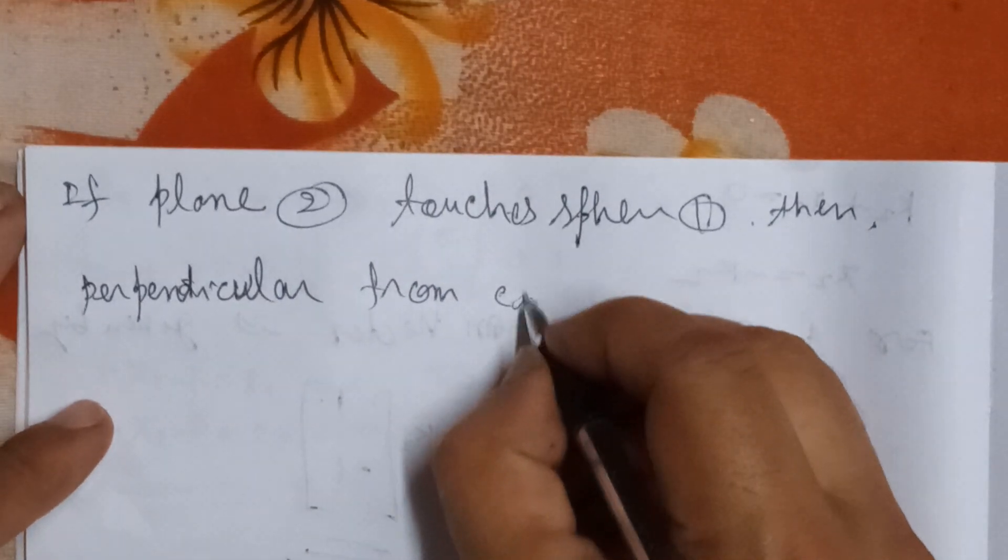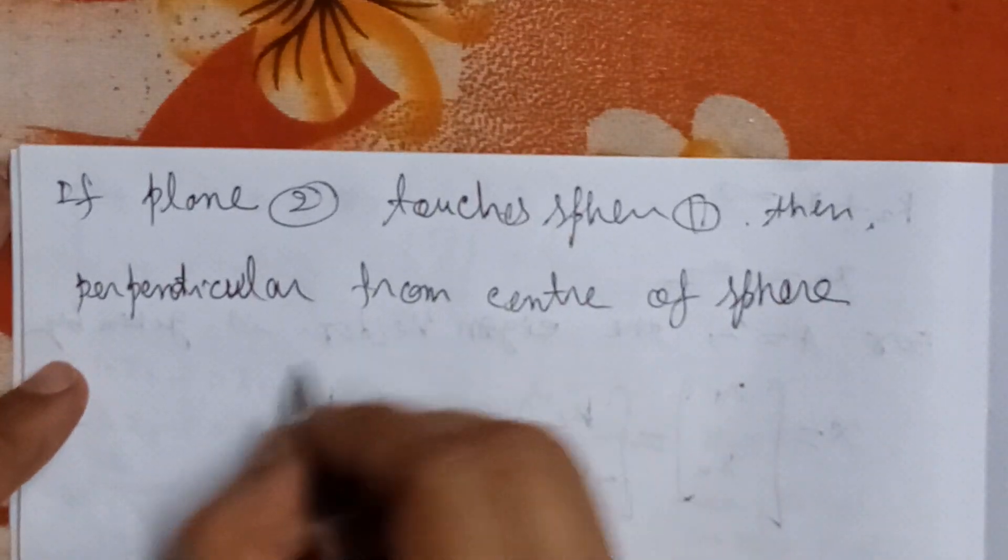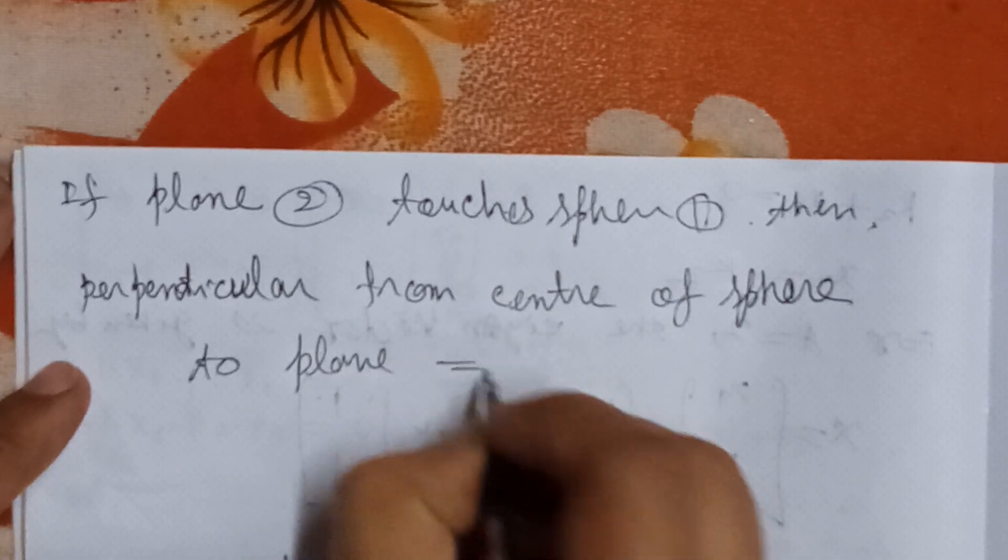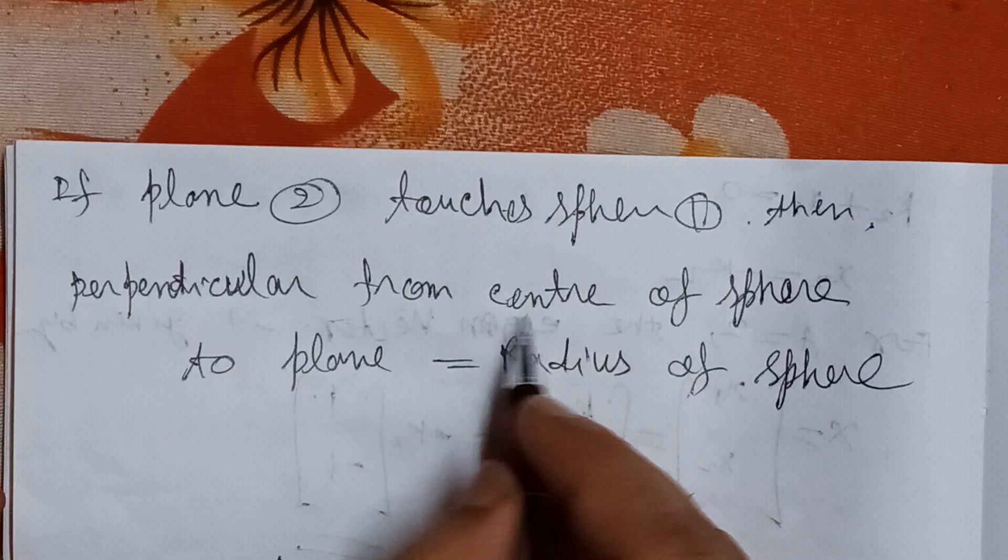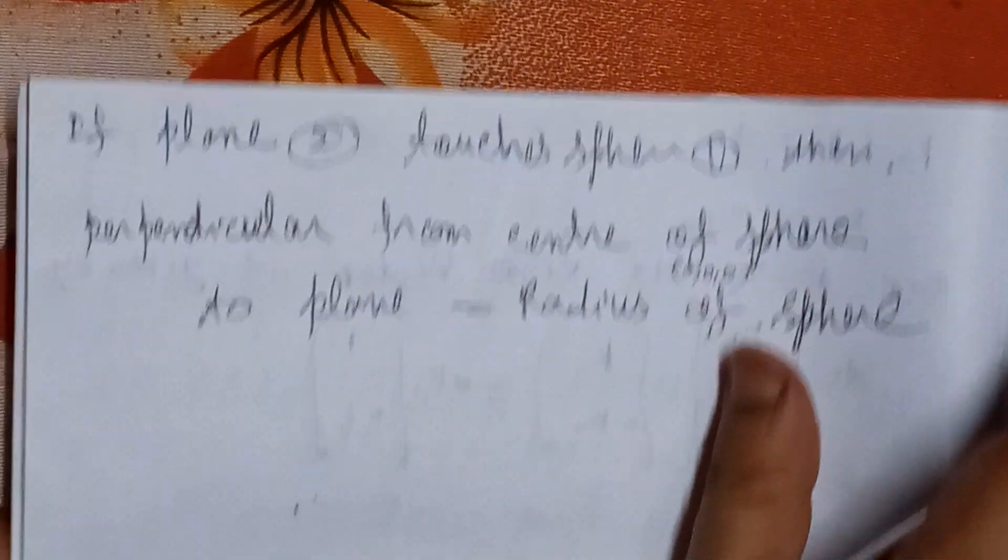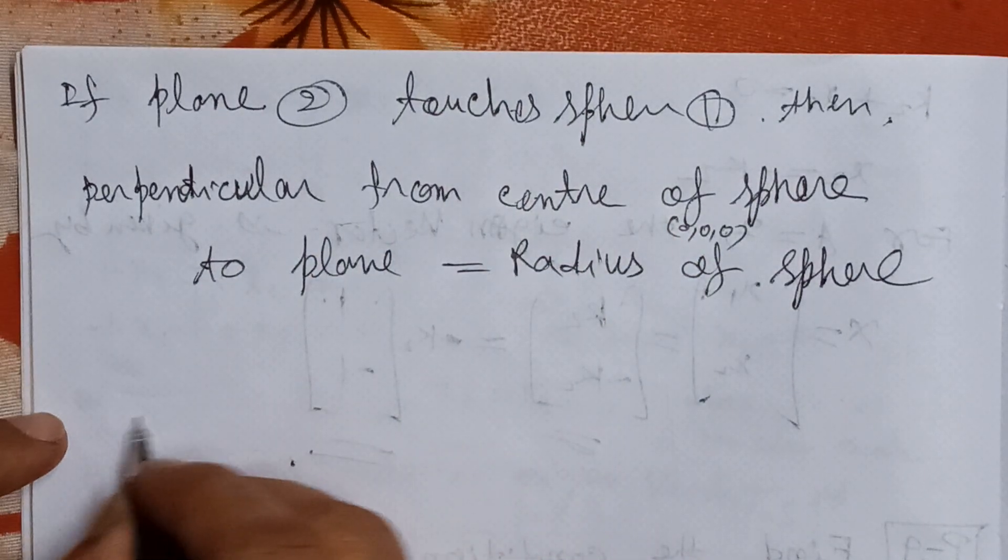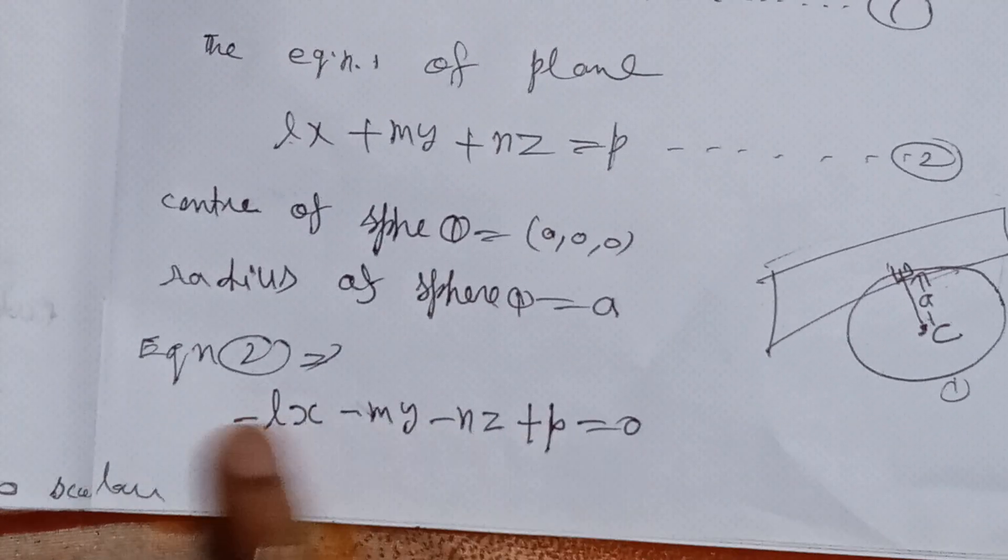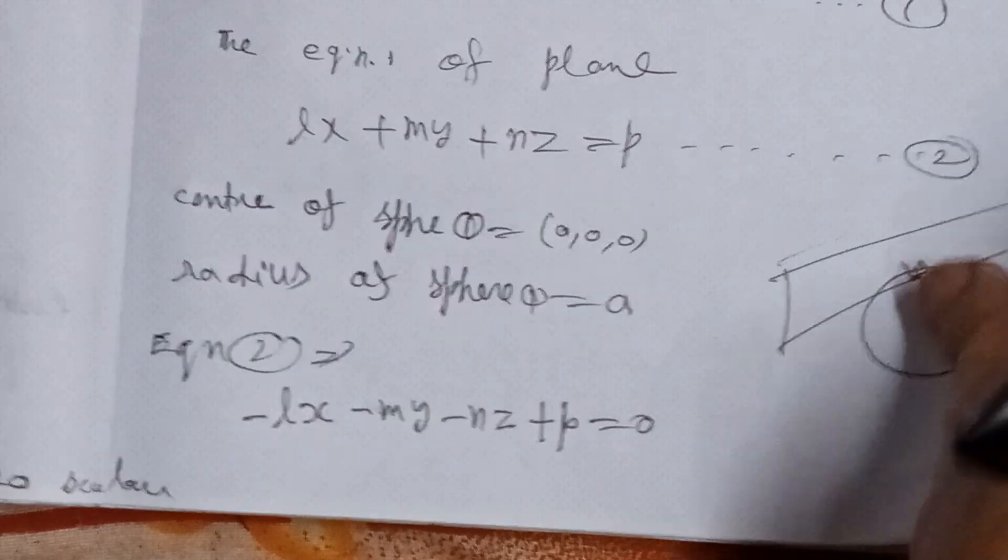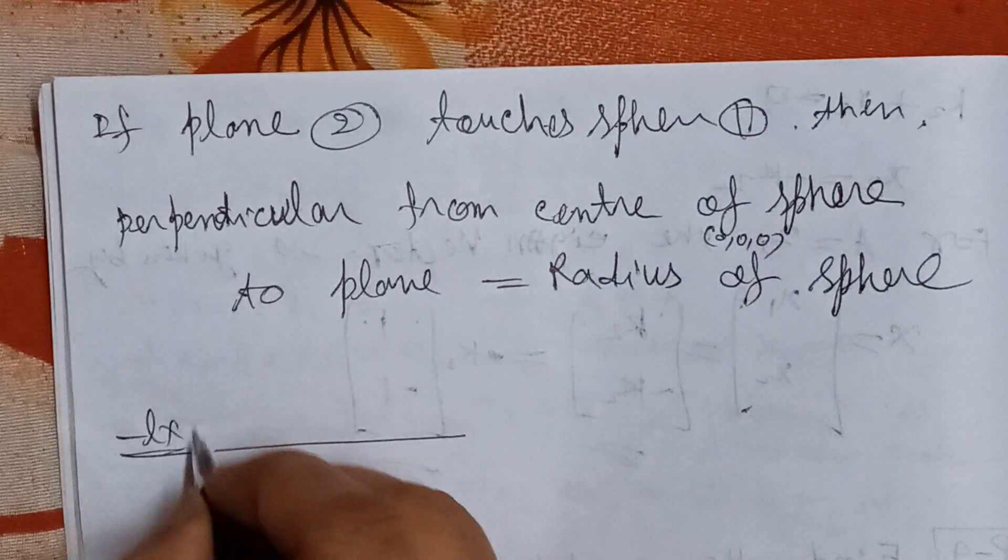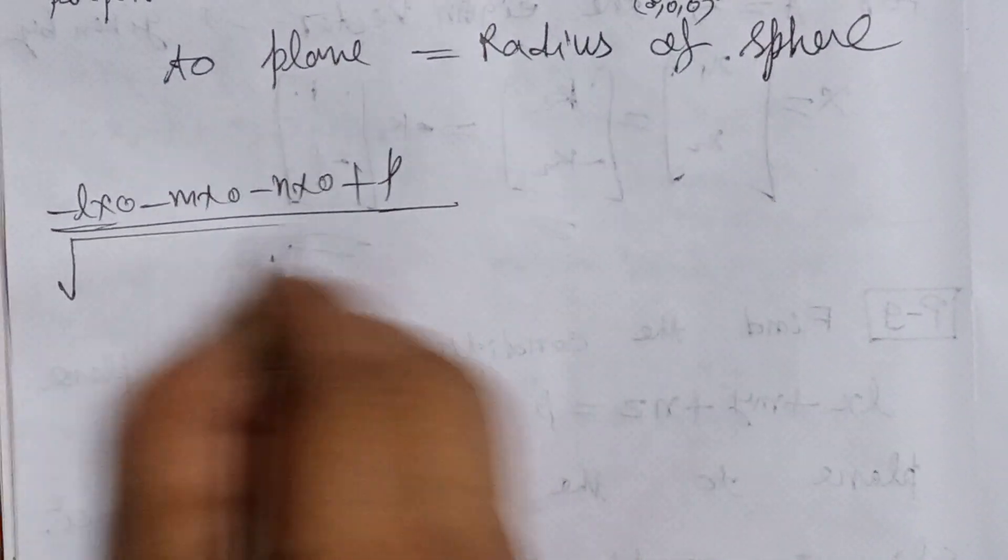The center of sphere is (0, 0, 0) and we can easily find this perpendicular distance by using the formula, by putting the value of center coordinates (0, 0, 0). This gives us: |-l(0) - m(0) - n(0) + p| / √(l² + m² + n²) = a, which is the radius of the sphere.